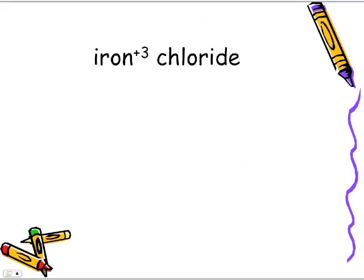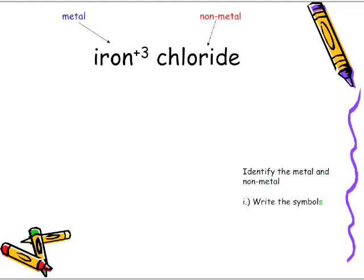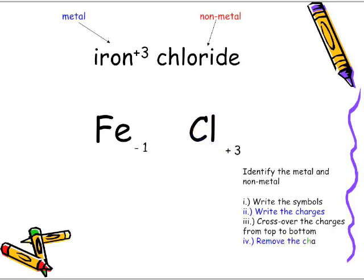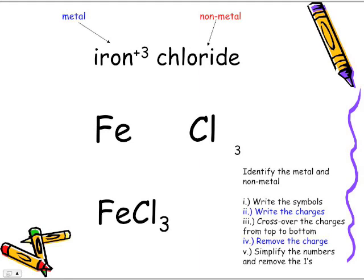Let's try the iron plus three version. Not much different with the steps — the only difference comes when writing the charges. Instead of the plus two, we write in plus three. Chloride doesn't change; it's still negative one. We cross over top to bottom, remove the charges, and simplify the numbers and remove the ones. So the formula for the version with the plus three charge is FeCl3.